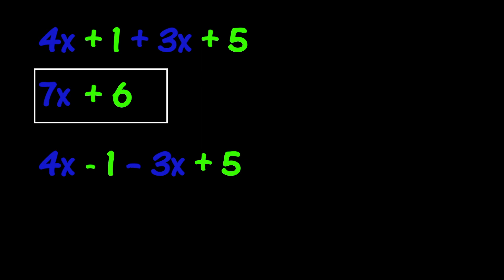Therefore, to simplify the expression, we will need to subtract 3x from 4x. So, the first term in the simplified expression is 1x.